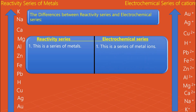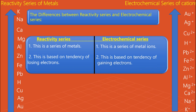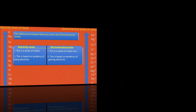Now we see the differences between the reactivity series and the electrochemical series. The reactivity series is a series of metals, while the electrochemical series is a series of metal ions — cations. The reactivity series is based on the tendency of losing electrons for metals, and the electrochemical series is based on the tendency of gaining electrons for metal ions. This is how they are different.